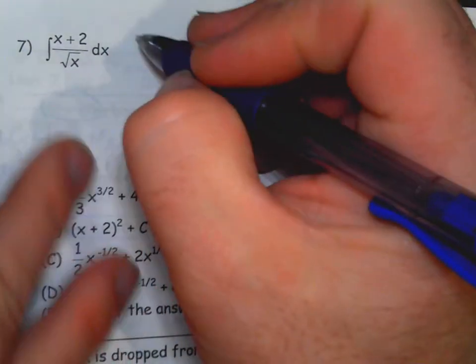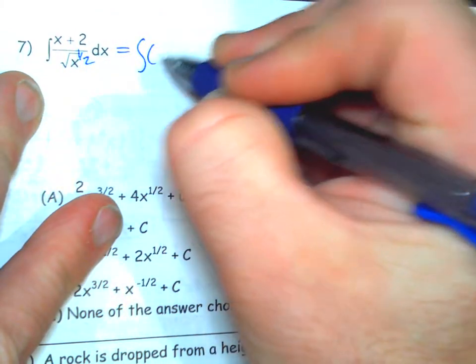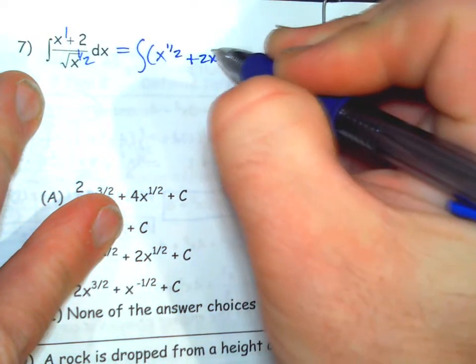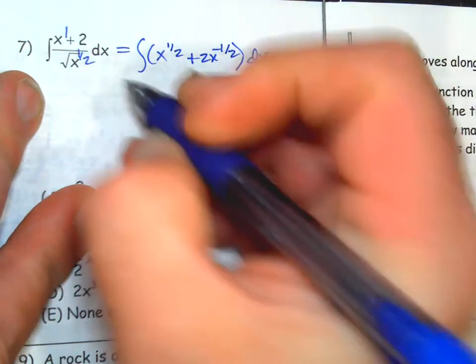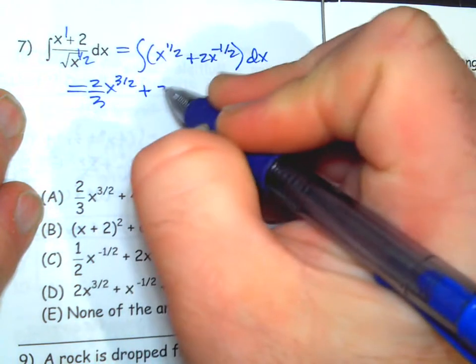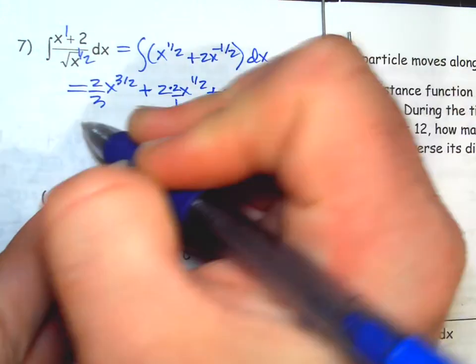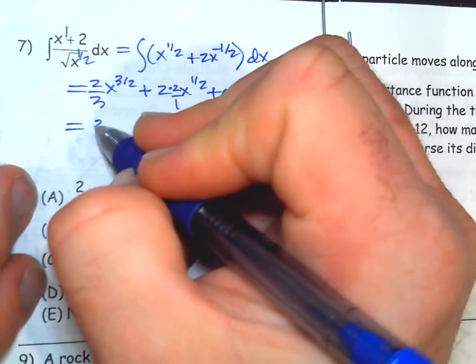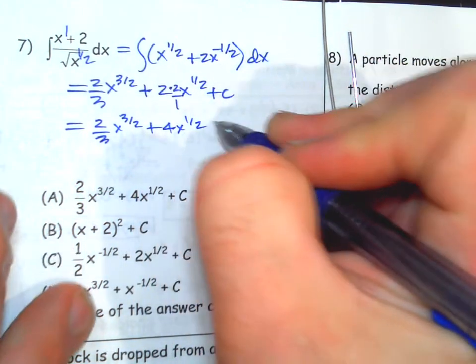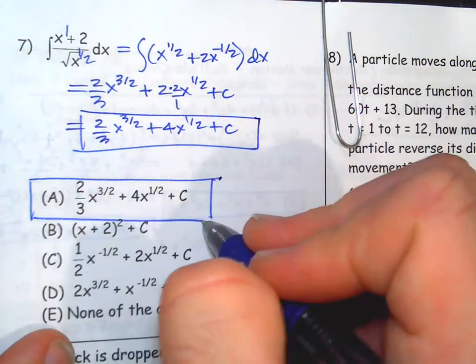So this one, I think our strategy should be to distribute the division. This is x to the 1 half. What is the x minus 2? Subtract. This is x versus. It's going to be x to the 1 half plus 2x to the negative 1 half dx. So you distribute the division. It's going to be power. We'll bump it up 1, increase by 1, divide by the new exponent, multiply by the 2 full. So I mean, 2 thirds x to the 3 halves plus 4x to the 1 half plus C is the first one right there. And that's A.